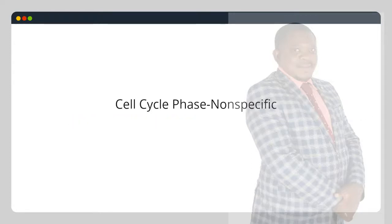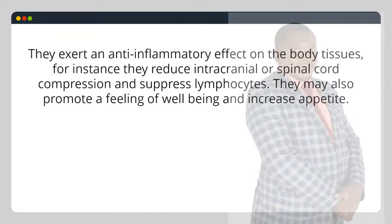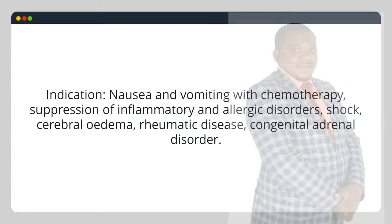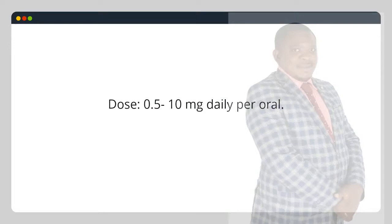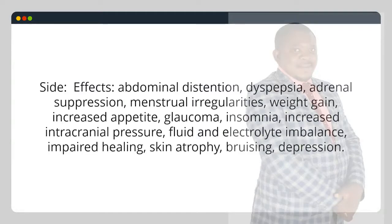7. Corticosteroids: cell cycle phase non-specific. They exert an anti-inflammatory effect on the body tissues; for instance they reduce intracranial or spinal cord compression and suppress lymphocytes. They may also promote a feeling of well-being and increase appetite. Dexamethasone — indication: nausea and vomiting with chemotherapy, suppression of inflammatory and allergic disorders, shock, cerebral edema, rheumatic disease, congenital adrenal disorder. Dose: 0.5–10 mg daily per oral. Side effects: abdominal distension, dyspepsia, adrenal suppression, menstrual irregularities, weight gain, increased appetite, glaucoma, insomnia, increased intracranial pressure, fluid and electrolyte imbalance, impaired healing, skin atrophy, bruising, depression.